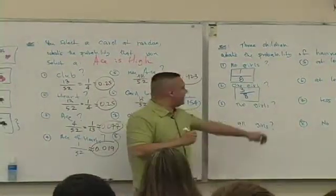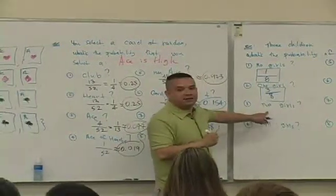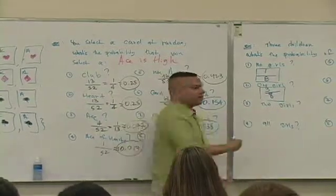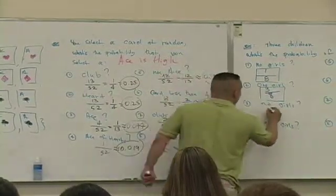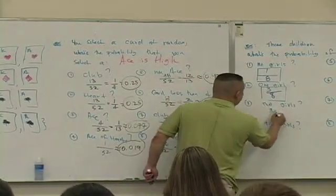How many outcomes consist of having exactly two girls? Three. So this also is three over eight.